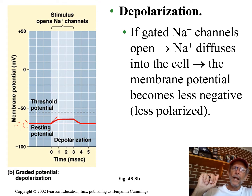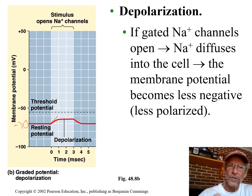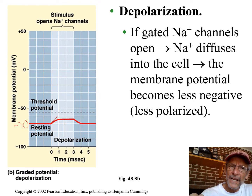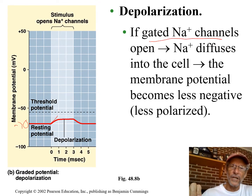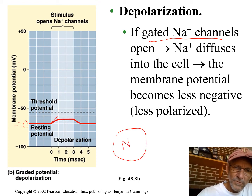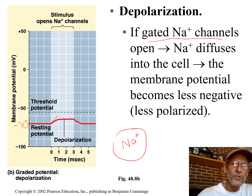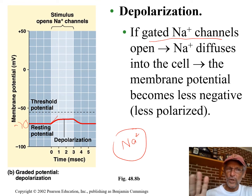How can it get less negative inside? Open the sodium channels. If these positive sodiums come in, it's a little less negative inside. So opening the sodium gated channels is going to be the beginning of this process — a nerve impulse.